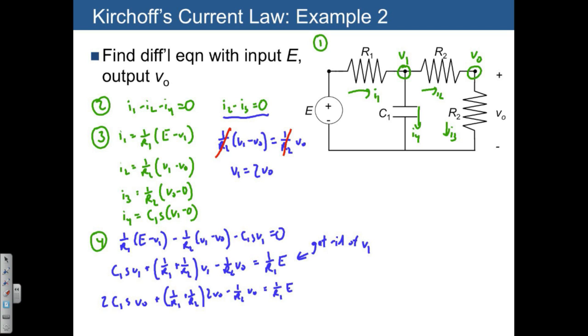We can combine some of the VO terms. We get 2C1 times VO dot plus 2 over R1 plus 1 over R2, which equals 1 over R1 times E.